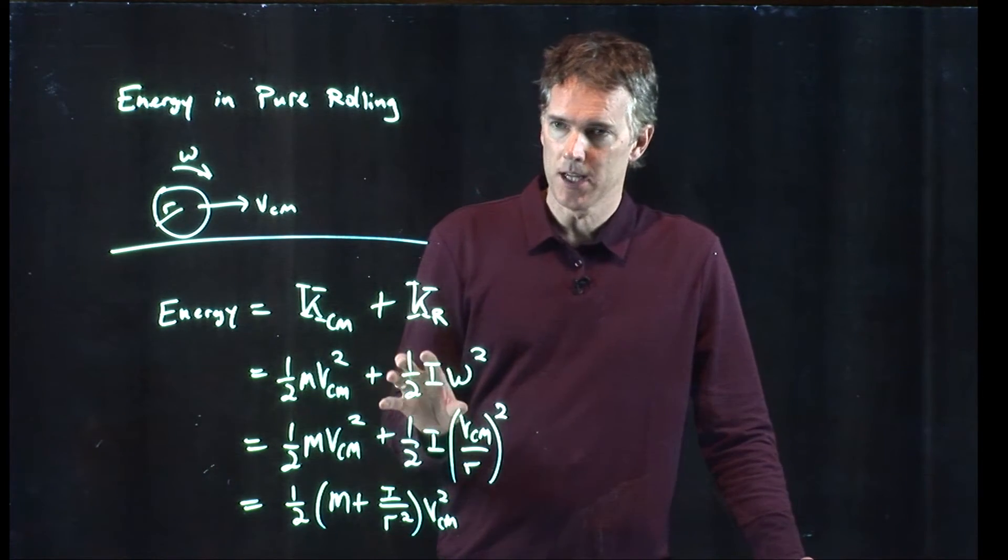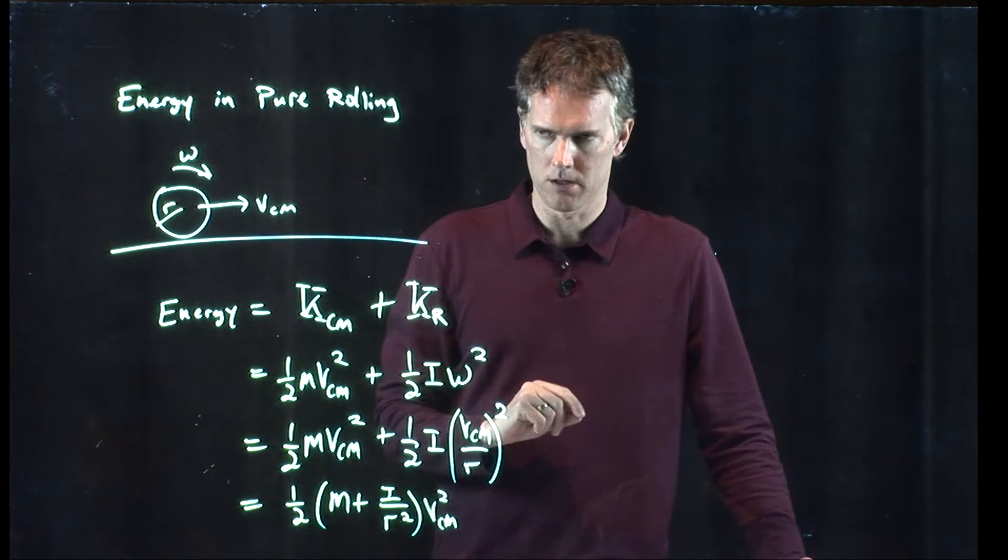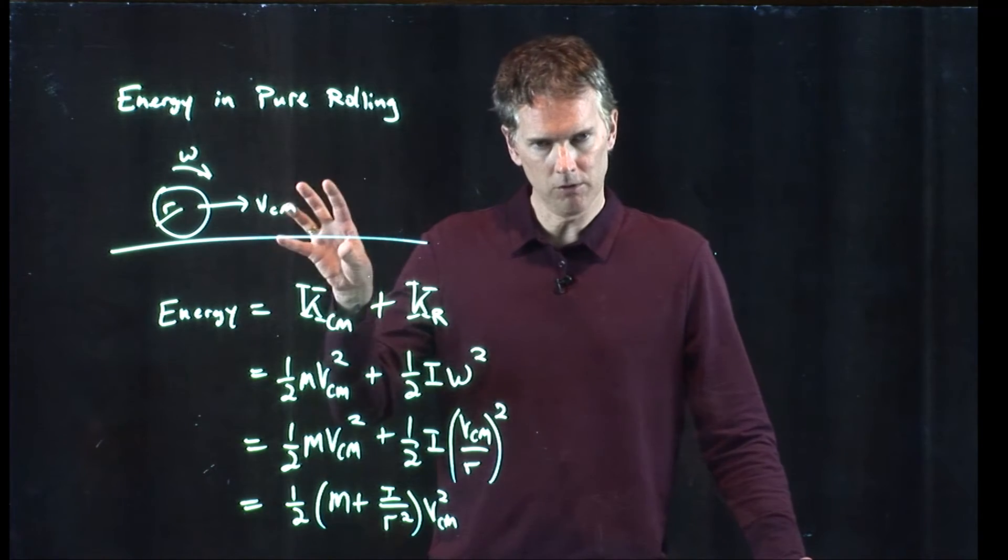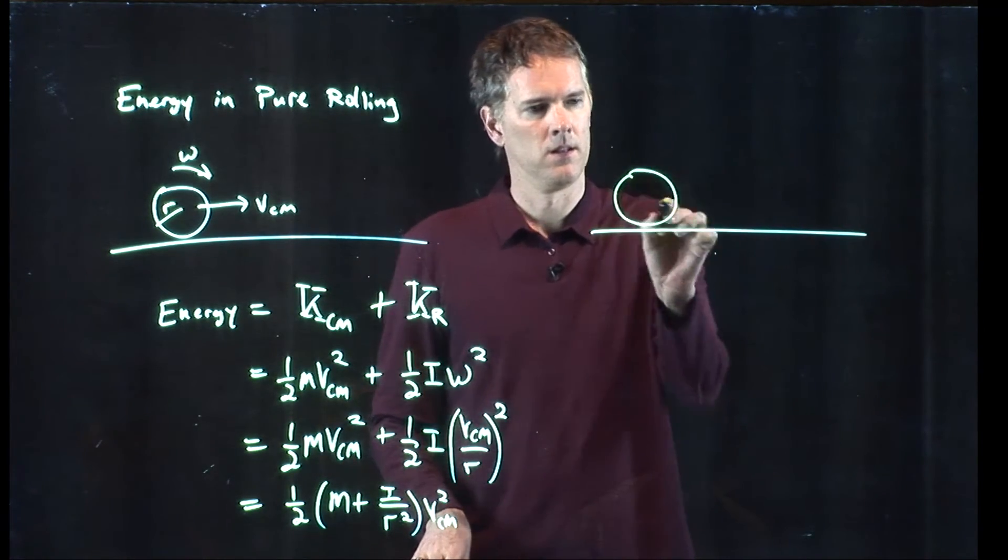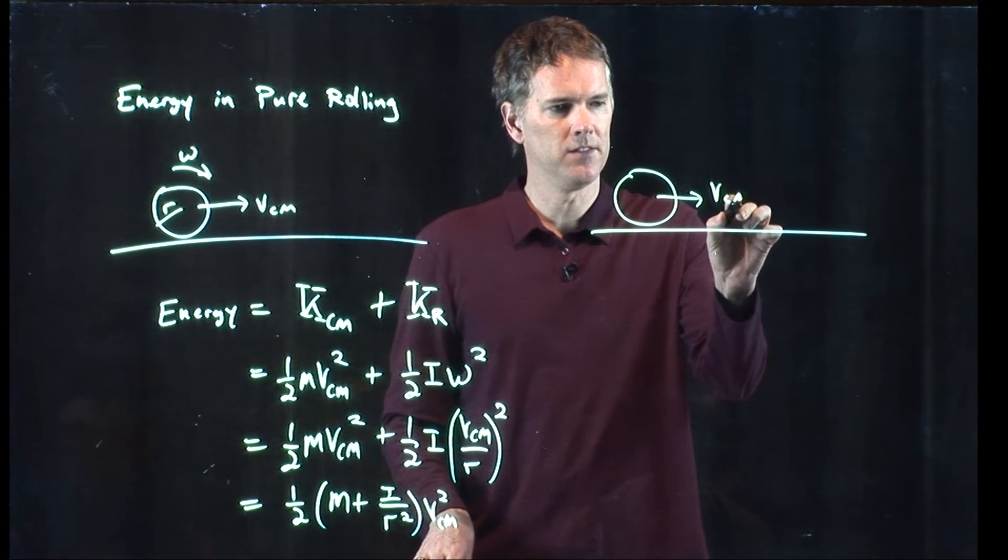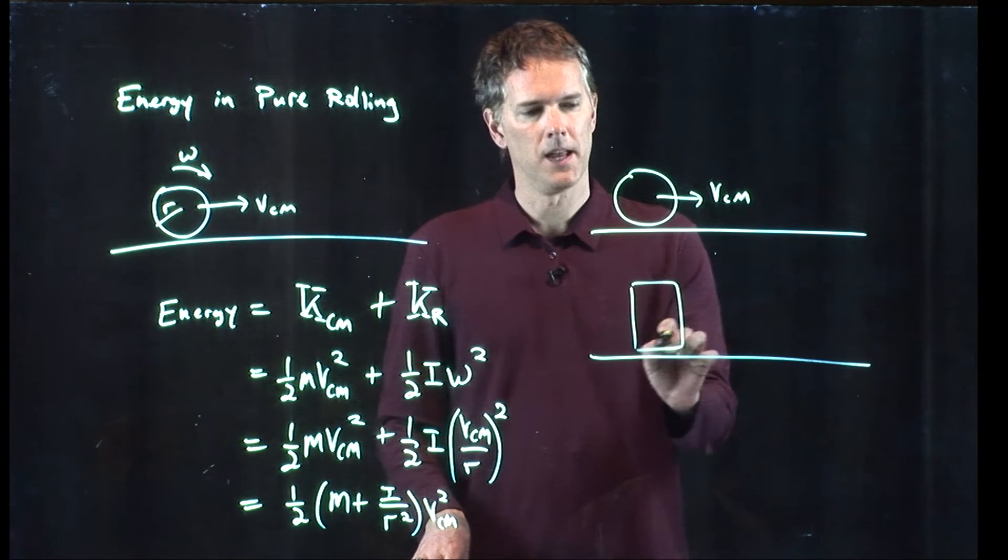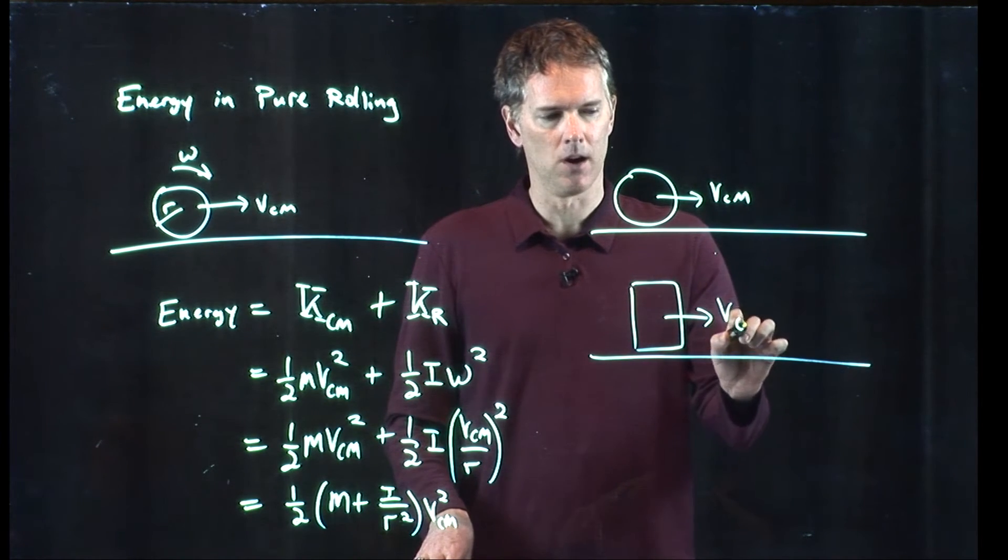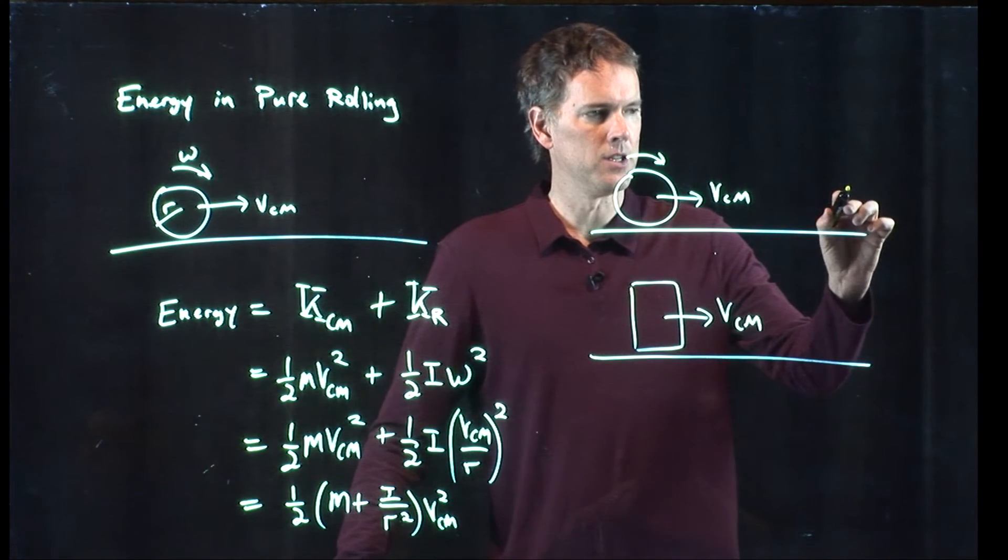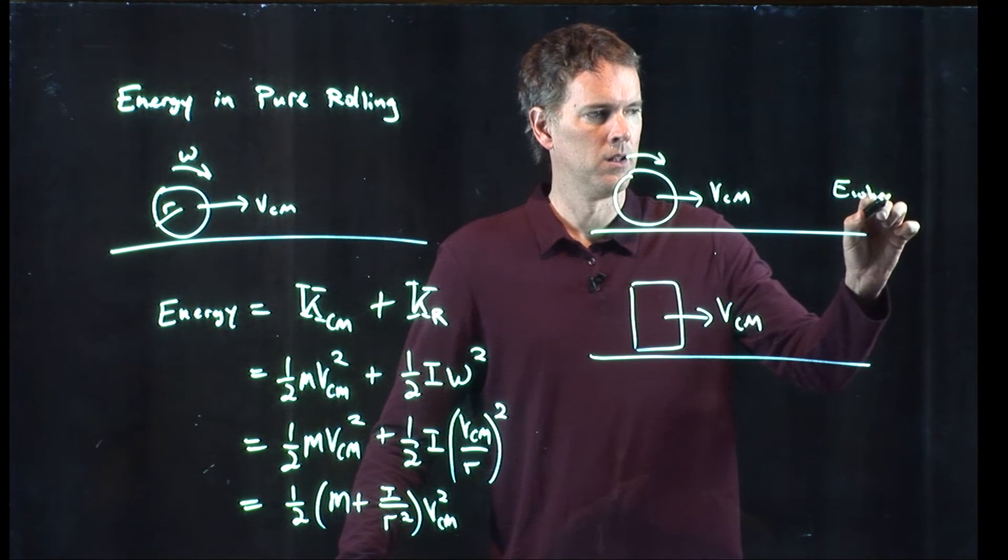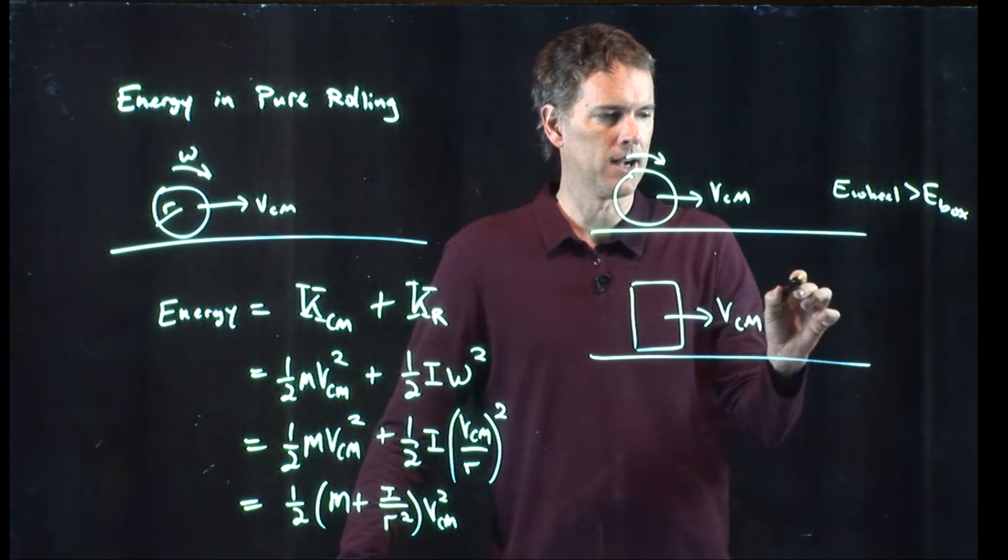but in the rotational kinetic energy. And so wheels that are rolling along at v_cm have more energy in them than a box sliding along at v_cm. And this energy in the wheel is bigger than the energy in the box sliding.